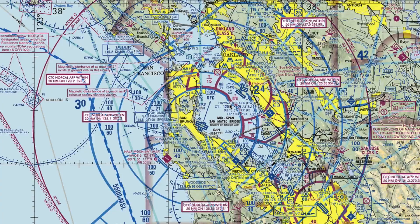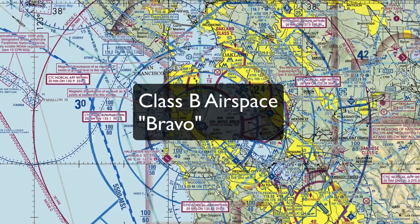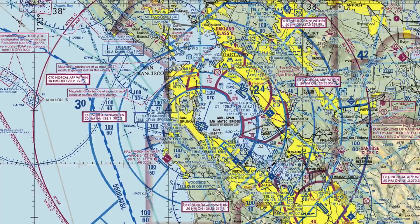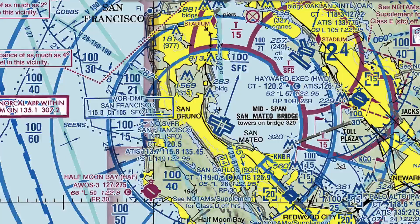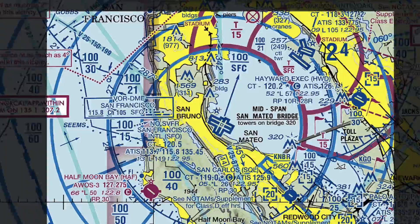Alright, so with that said, let's jump right into it. Right here we're looking at a VFR sectional chart for the San Francisco area. This is Class B, or Class Bravo airspace, and it surrounds our nation's busiest airports such as LAX, JFK, Philadelphia, Dallas-Fort Worth, and in this example, San Francisco International. Bravo airspace is indicated with a solid blue line on aeronautical charts.